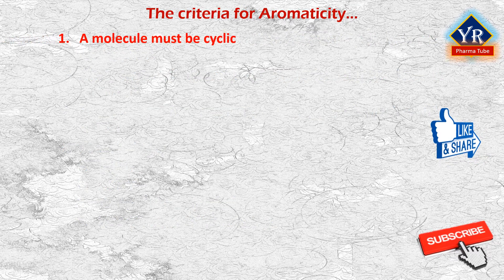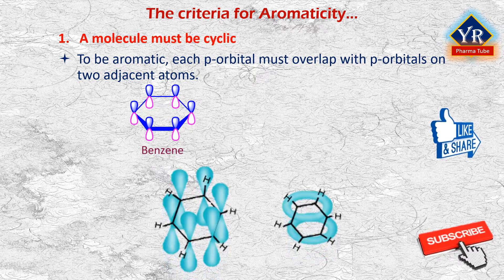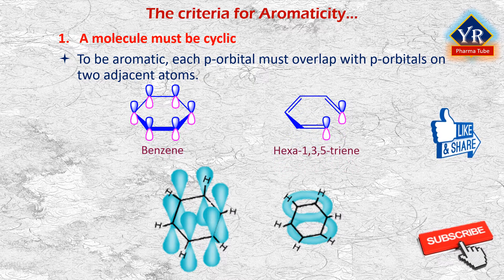Number one: a molecule must be cyclic. To be aromatic, each p orbital must overlap with p orbitals on two adjacent atoms. The p orbitals on all six carbons of benzene continuously overlap, so benzene is aromatic. The second compound, hexa-1,3,5-triene, also consists of six p orbitals, but the two on the terminal carbons cannot overlap with each other, which means it does not possess a ring. So hexa-1,3,5-triene is not aromatic.